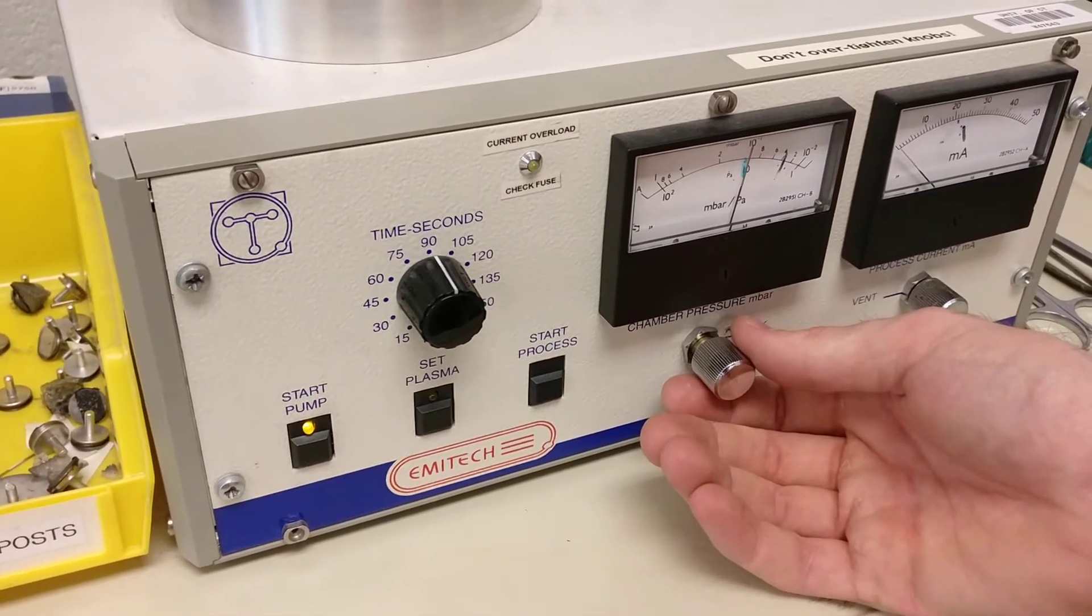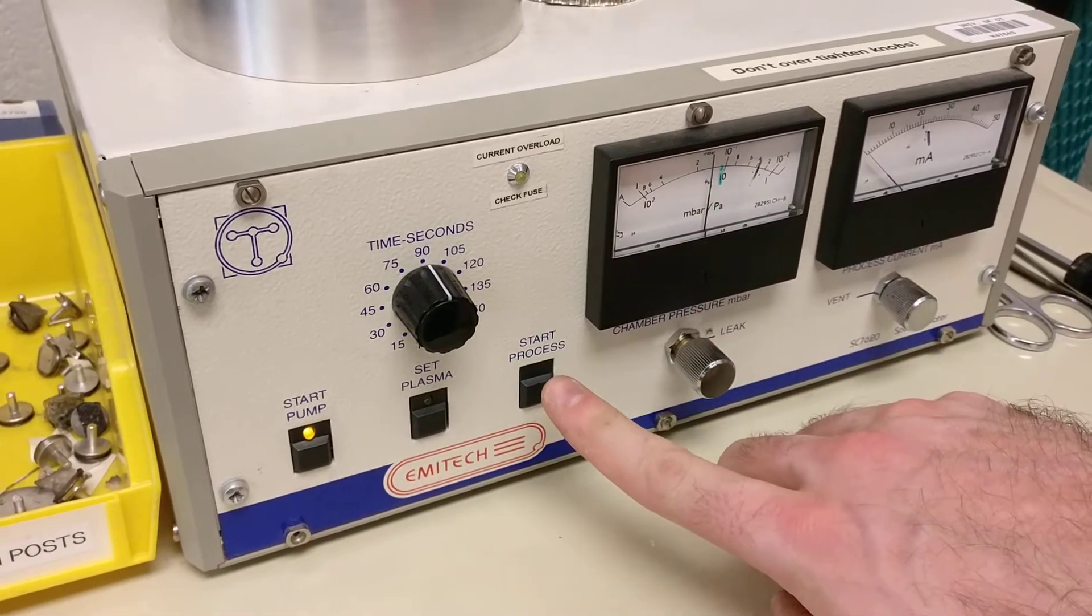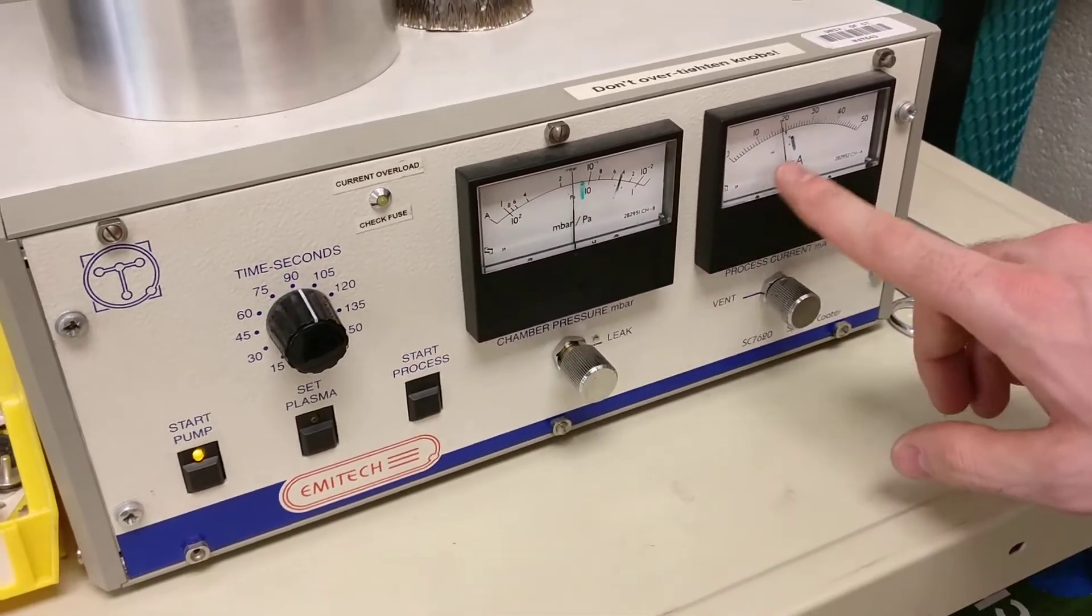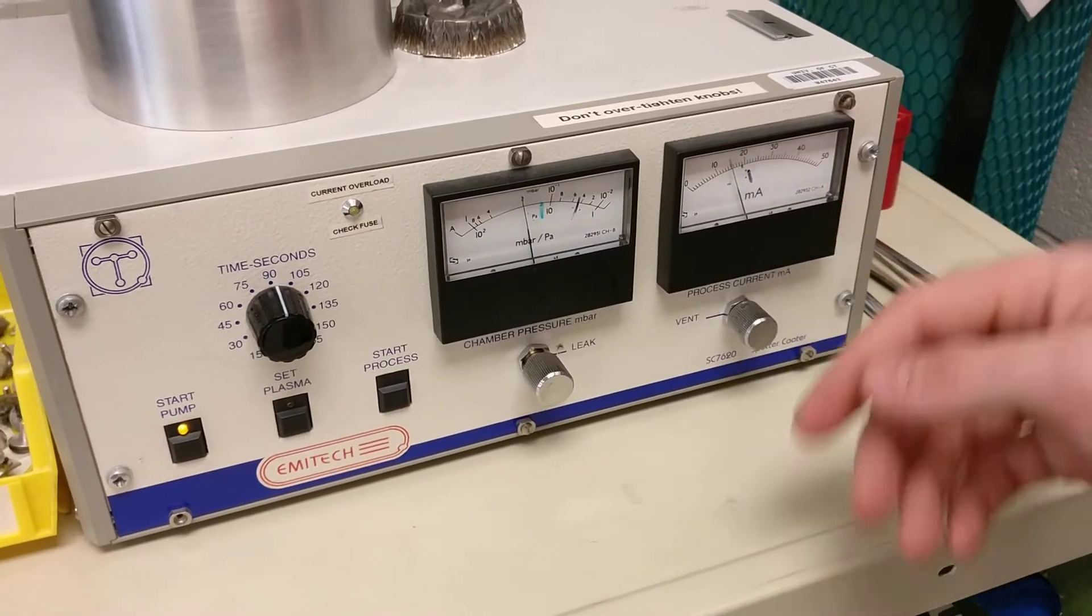Get it to go to that green line, and then we're going to push start process. You'll notice the current jumps. We're going to make sure that it doesn't go over 20 milliamps, but you can see it dropping now.